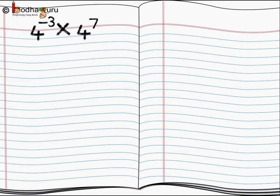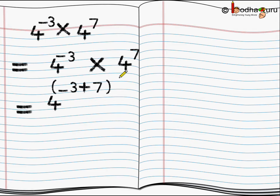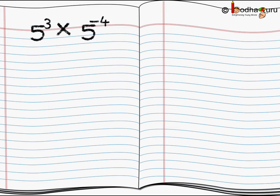Let us solve more examples. Here we have four to the power minus three multiplied by four to the power seven. One power is negative and the other is positive. We just add the powers: minus three plus seven equals four. So we get the answer four to the power four.